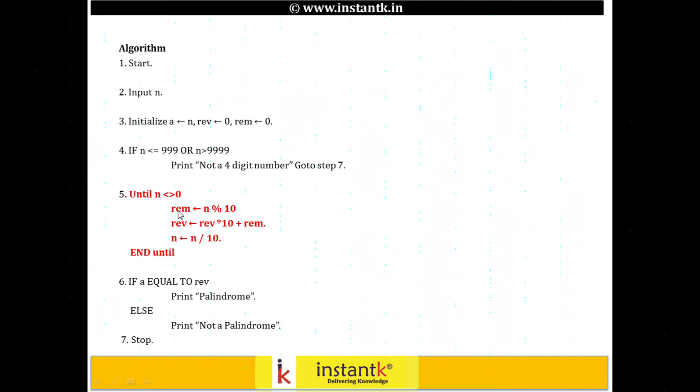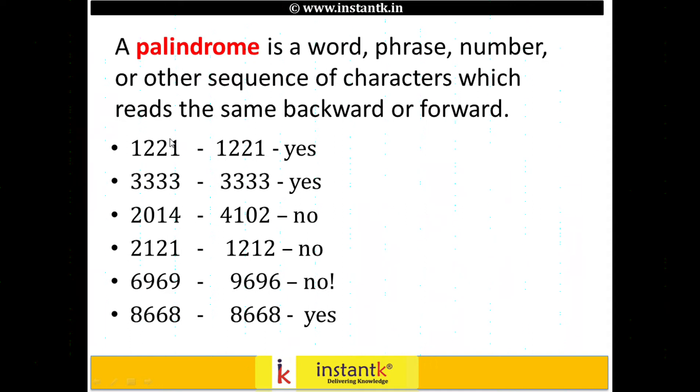The core algorithm is: until the input parameter n is not equal to 0, first is reminder - you need to take the reminder value, which is basically n modulo 10 will give you a reminder. If it is 2112, it will give you the last digit 2. So what we are doing is reverse times 10. You are left shifting the reverse by a decimal point 10 and adding the reminder. And you divide the n by 10. So basically, we read this first digit using a modulo of 10, so I get 1, and then I left shift into the reminder by 10 and add it.